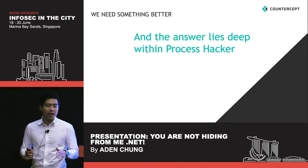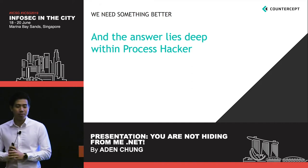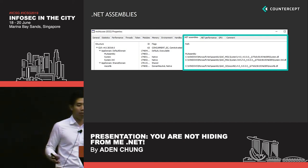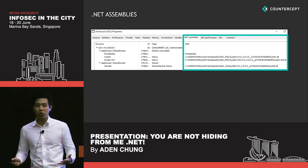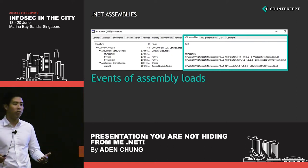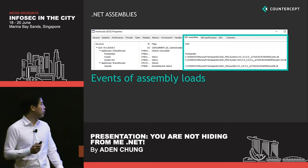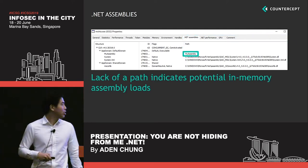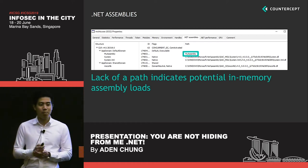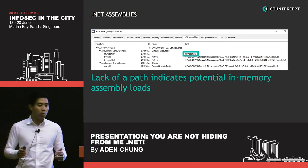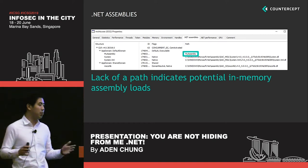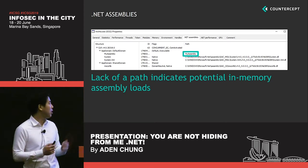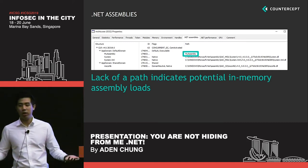Fortunately, the answer actually lies deep within Process Hacker. In Process Hacker, there's a column that typically doesn't appear by default — it only appears when it detects events related to the loading of .NET assemblies. I'd like you to focus on one assembly in particular: MyAssembly. If you look at it and compare to the other assembly loads, you'll notice there is a lack of a file path. This is a very strong indicator of a potential in-memory assembly load, because the other assemblies have paths because they are located on disk. But in this case, since it wasn't found on disk, there's no path.